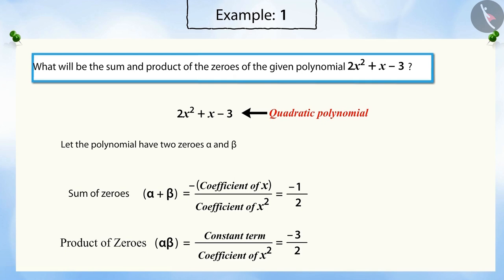So, in this way we can find the sum and product of zeros of the given polynomial. Let us see another example.